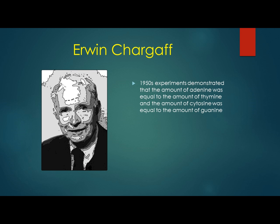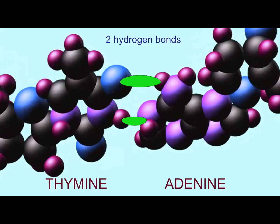Chargaff in the 1950s demonstrated that the amount of adenine is always equal to the amount of thymine, and the amount of guanine is always equal to the amount of cytosine.